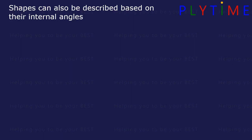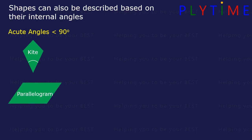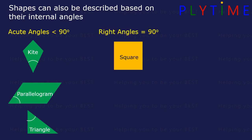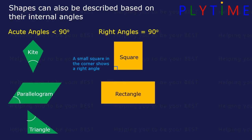Shapes can also be described based on their internal angles. Acute angles are less than 90 degrees — here in a kite, here in a parallelogram, and here in a triangle. Right angles equal 90 degrees. Here in a square, a small square in the corner shows that it's a right angle. Here's one in a rectangle.